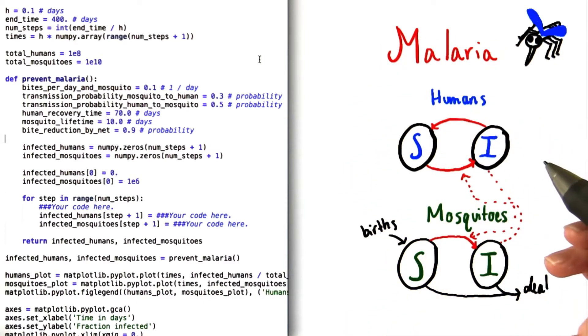To model a scenario like this, we need two separate bubble diagrams: one for the mosquito population and one for the human population.